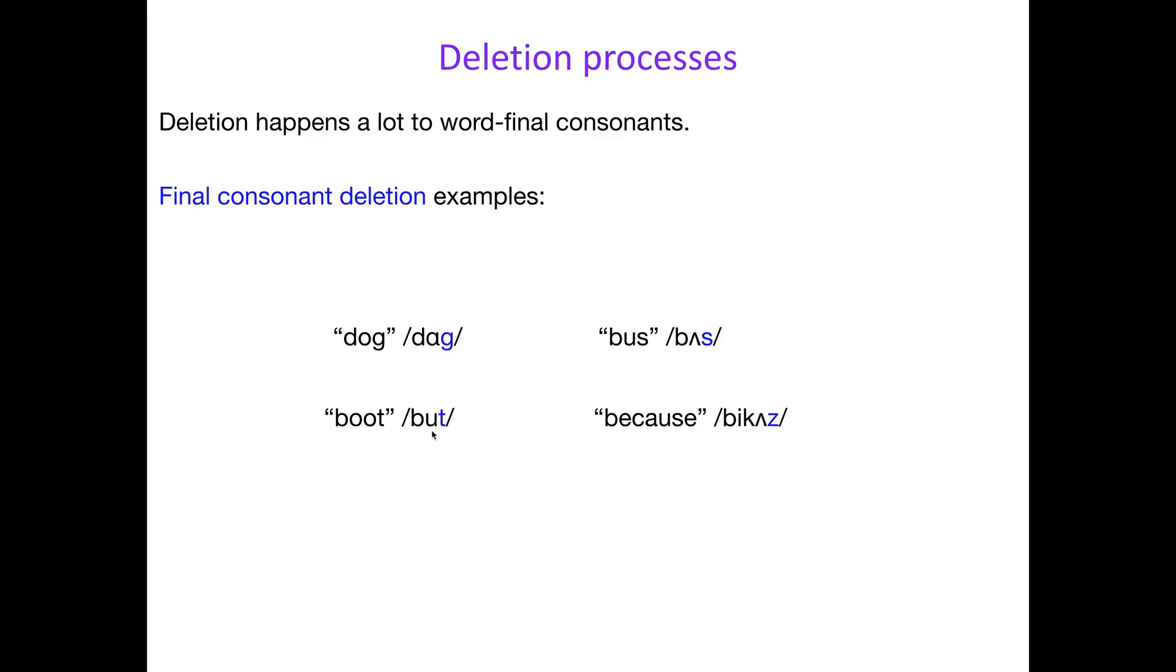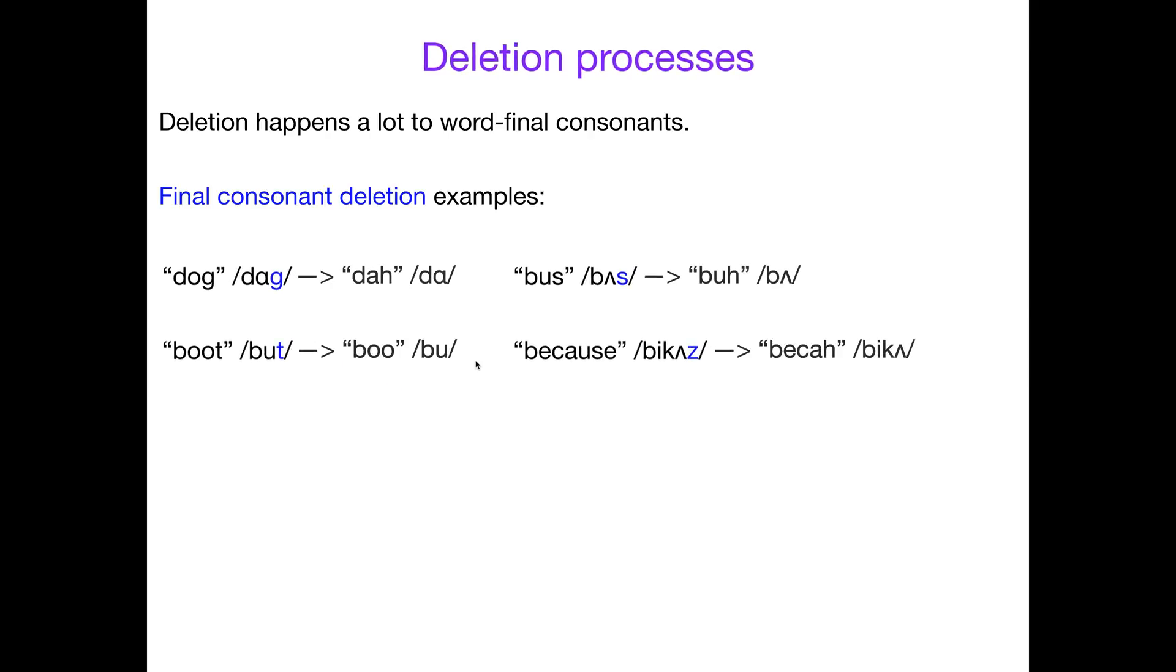So dog and bus and boot and because all have consonants as the very last thing in the word. If final consonant deletion has occurred, they get pronounced as you might expect: dog becomes da, bus becomes buh, boot becomes boo, and because becomes becau. You just delete that final consonant. This happens a lot.